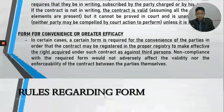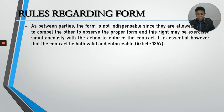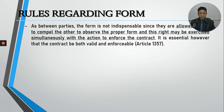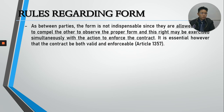As between the parties, form is not indispensable. Because they are allowed to compel the other to observe the proper form — to execute the proper public instrument — this right may be exercised simultaneously with the action to enforce the contract. It is essential that the contract is valid and enforceable at the outset. For example: if A sells land to a buyer, the sale of real property must be in writing or else it is unenforceable under the Statute of Frauds — specifically paragraph (e) of paragraph 2 of Article 1403.